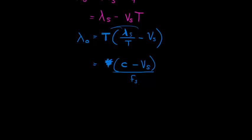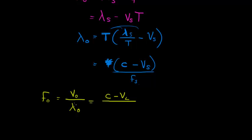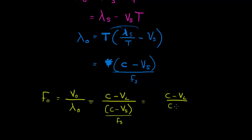So the frequency observed equals the velocity observed divided by the wavelength observed. The velocity observed is C minus the velocity of the listener — the relative velocity at which the sound wave is observed — divided by lambda zero, which is (C minus V_source) divided by F_source. Dividing by a fraction means multiplying by its inverse, and that gives us our Doppler effect formula. And that's it.